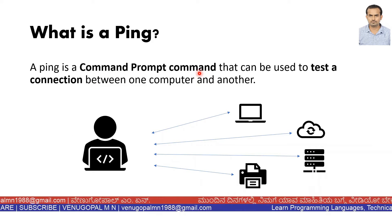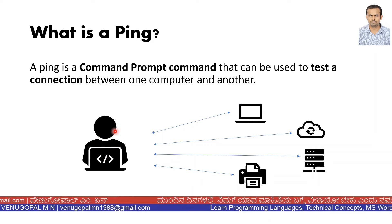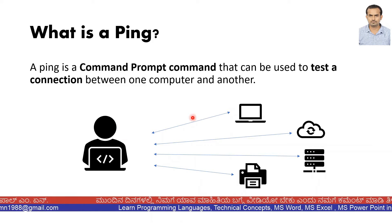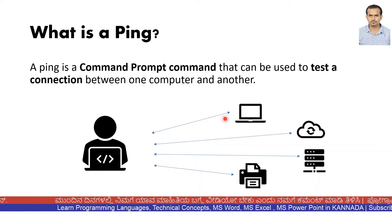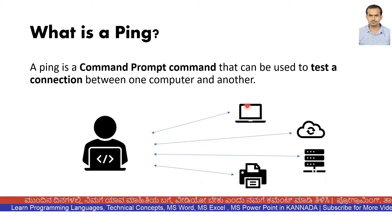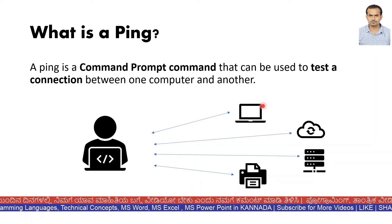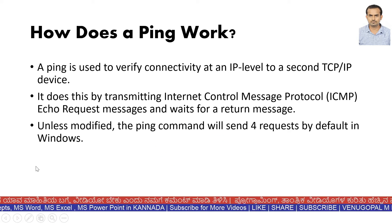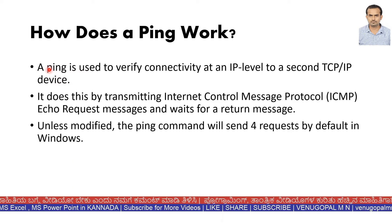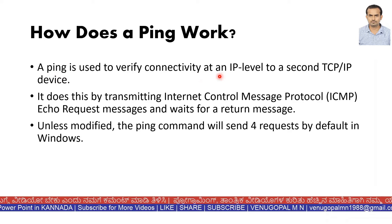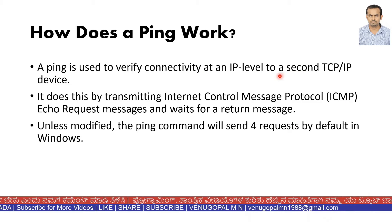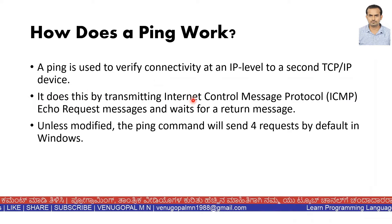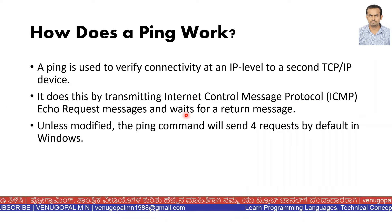PING is used to test the connection between one system and another system, or one computer to another computer which is connected by networking. PING can test a server, a portal, a printer, or any device on the network. How does PING work? PING is used to verify connectivity at an IP level — Internet Protocol level — to check a TCP/IP device.